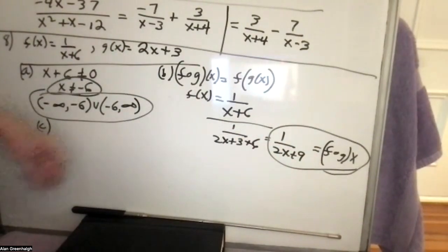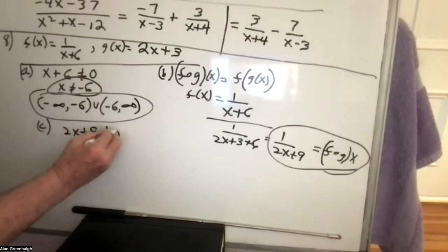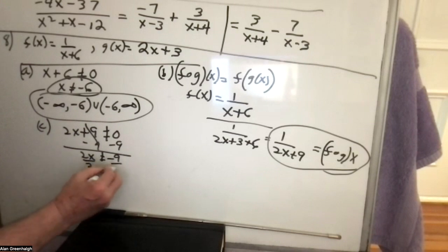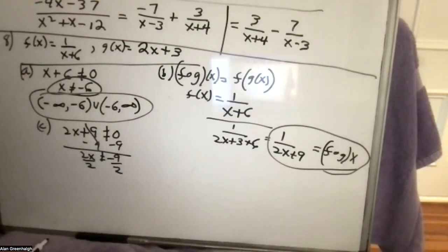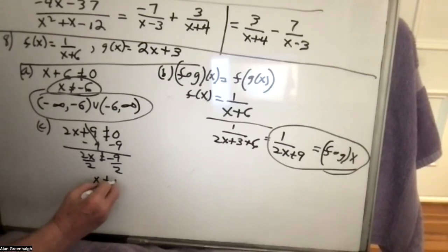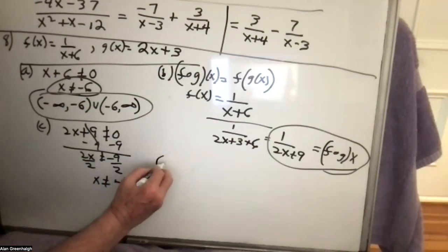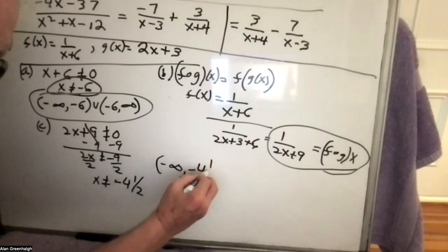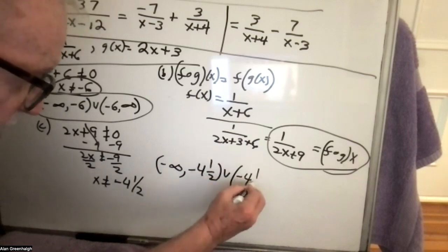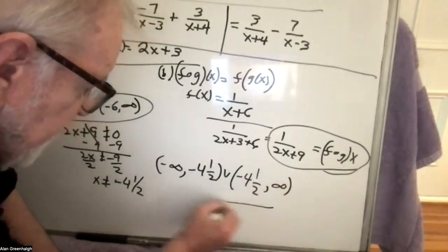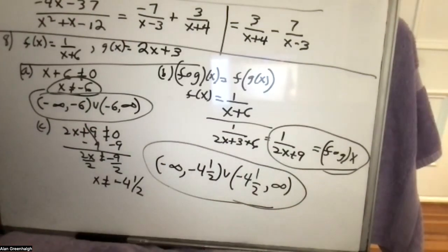The final part was to find the domain of f of g of x. Let 2x plus 9 not equal 0 — that's the domain. So 2x cannot equal negative 9, divide by 2, and x is not equal to negative 4.5, or negative 9 over 2. I accepted that as well. The interval notation was what I was looking for, but in higher mathematics that's the acceptable way of doing it.